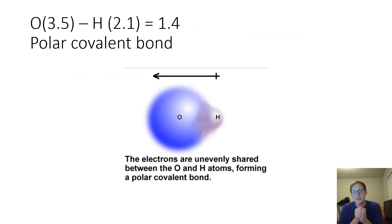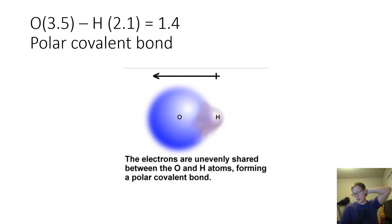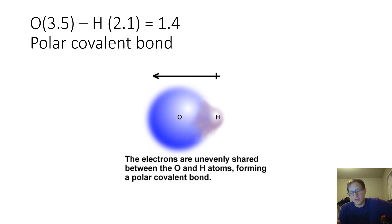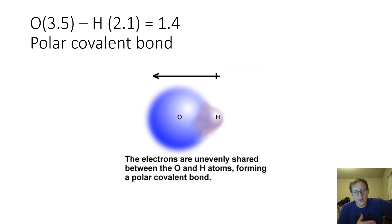An example is water, H2O, and another one is hydroxide — just one oxygen and one hydrogen. The electronegativity of oxygen is 3.5 and the electronegativity of hydrogen is 2.1. When you subtract those, you get 1.4. Going back to our ranges, polar covalent is between 0.4 and 1.7, and 1.4 fits right in there. So we know that this would be a polar covalent bond.